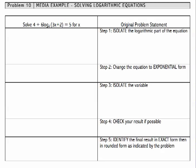Step one with our given equation is to isolate the logarithmic part. Our given equation is 4 plus 6 times log base 2 of the quantity 3x plus 2 equals 5. We're trying to solve that for x, so the part we want to isolate is this log base 2 of 3x plus 2.